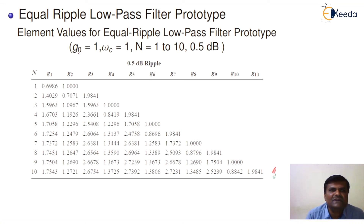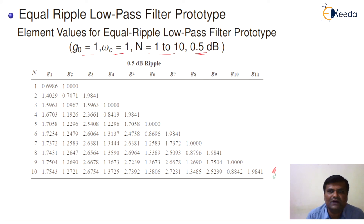For the second type of filter, the equal ripple filter, we again set G0 equal to 1, omega_c equal to 1, and n from 1 to 10. A new term is added here: 0.5 dB ripple. In an equally ripple prototype, there are ripples in the passband to achieve sharp attenuation cutoff. The acceptable attenuation in the passband should be less than 3 dB. Here, we consider a passband ripple attenuation of 0.5 dB, and the different coefficient values have been calculated accordingly. For example, if you select n equal to 5, these represent the different coefficient values.